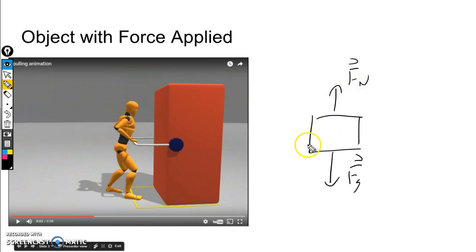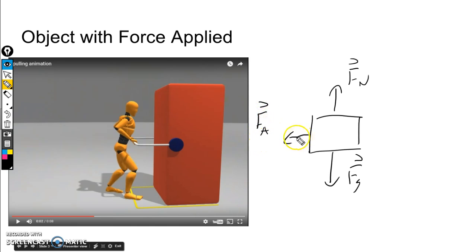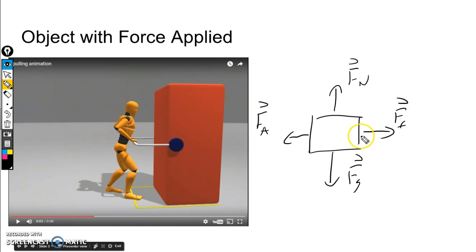We can see the person is pulling, which indicates we've got a force applied — represented as F-A. Now from the animation, this object wasn't moving. Therefore there had to be a force to counteract the force applied. In this particular case, it is going to be force friction, represented as F-F with a half arrow.